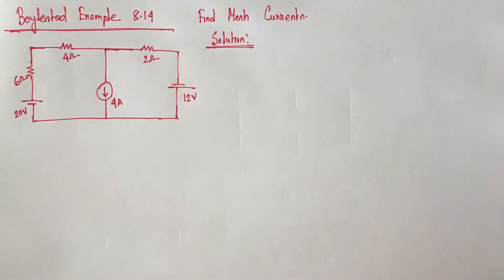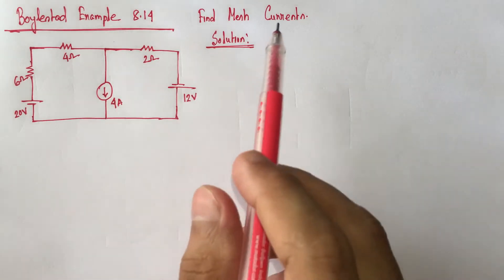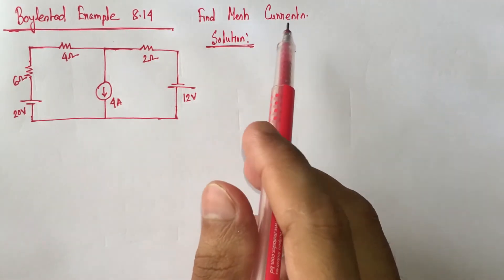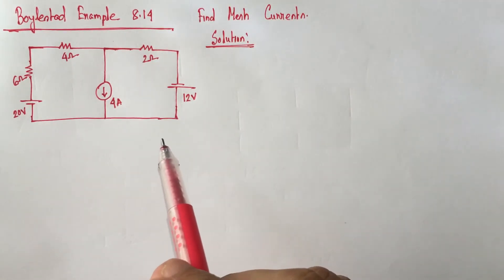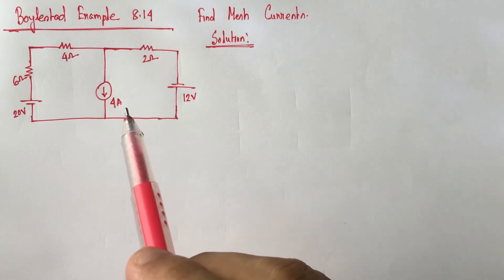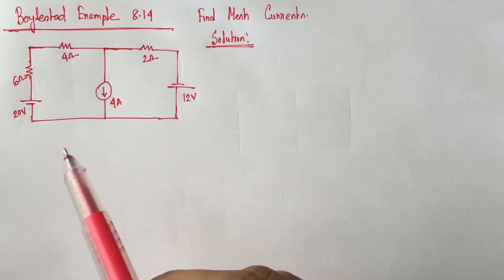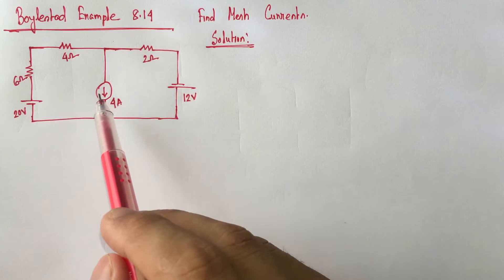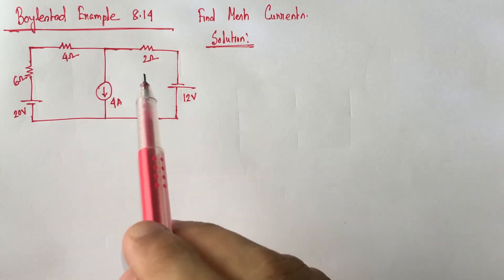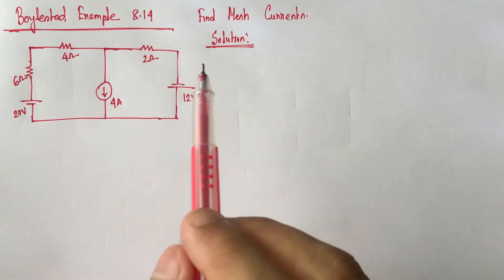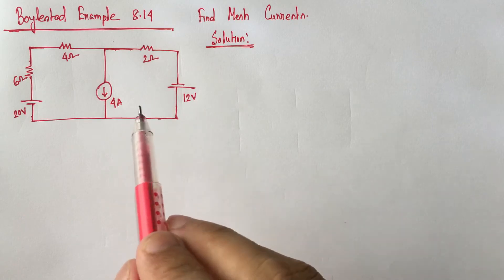Hi viewers, we will solve example 8.14 from Boyle state. This is a super mesh related problem where we have to identify the mesh currents. What is a super mesh? When there is a current source in common between two meshes, the circuit is called a super mesh circuit.